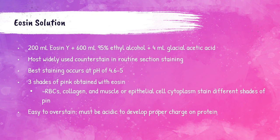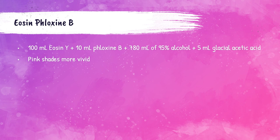Eosin solution is prepared by mixing 200 mL of eosin Y, 600 mL of 95% ethyl alcohol, and 4 mL of glacial acetic acid. It is the most widely used counterstain in routine section staining. The best staining with eosin occurs at a pH of 4.6 to 5. When used correctly, eosin can achieve at least three different shades of pink — for example, red blood cells, collagen, and muscle or epithelial cytoplasm all stain different shades. The solution must remain acidic to provide the proper charge on the proteins.